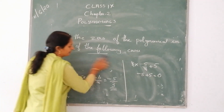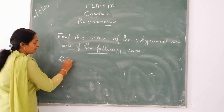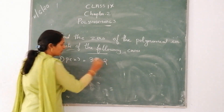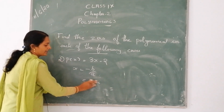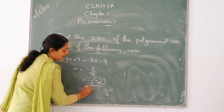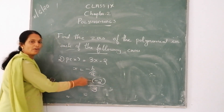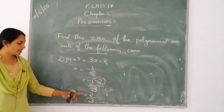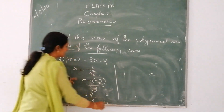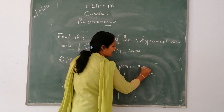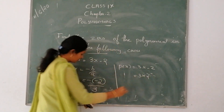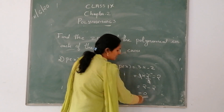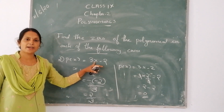Next question: p of x is equal to 3x minus 2. Therefore, x is equal to negative b by a. That is equal to negative of negative 2 divided by a, which is 3. Negative of negative 2 — that is negative times negative — is equal to positive 2. So 2 divided by 3. Therefore, the zero of the polynomial is 2 by 3. Now we will check it. p of x equals 3 into 2 by 3 minus 2. Cancelling 3 and 3, we get 2 minus 2, that is equal to 0. Therefore, the zero of the polynomial 3x minus 2 is 2 by 3.